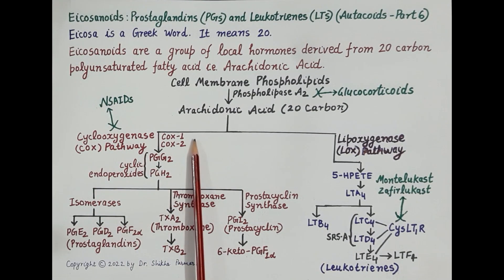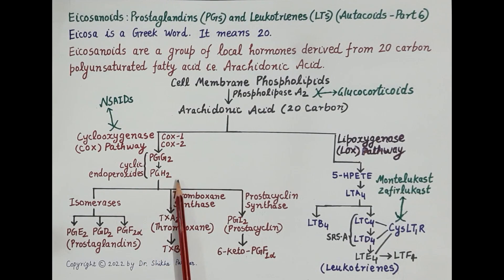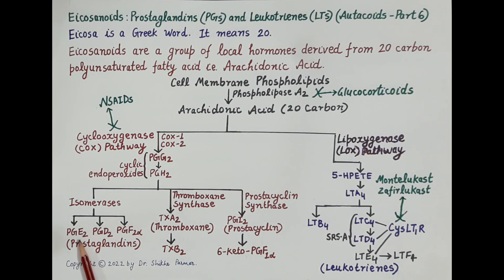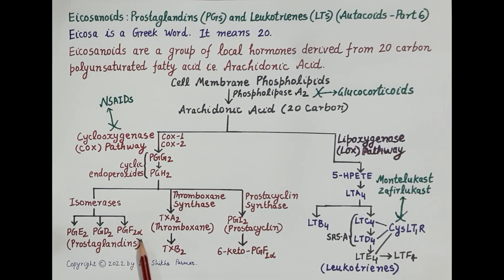The cyclooxygenase pathway is mediated by the enzyme cyclooxygenase (COX), primarily COX-1 and COX-2. Cyclooxygenase generates cyclic endoperoxides PGG2 and PGH2, both of which are highly unstable. Isomerase enzymes convert PGH2 into isomers: prostaglandin E2, prostaglandin D2, and prostaglandin F2α, depending on the type of isomerase and the tissue.